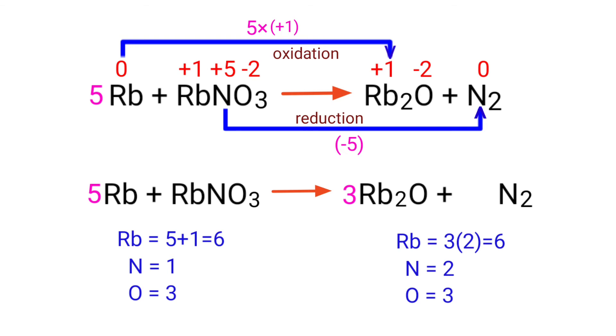The oxygen and rubidium atoms are balanced. Now we need to balance the nitrogen atoms. To do this, put a coefficient of 1/2 in front of N2.